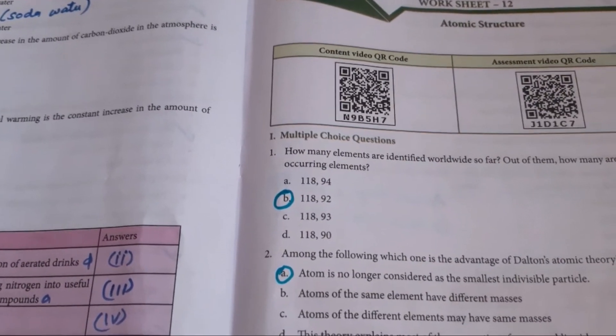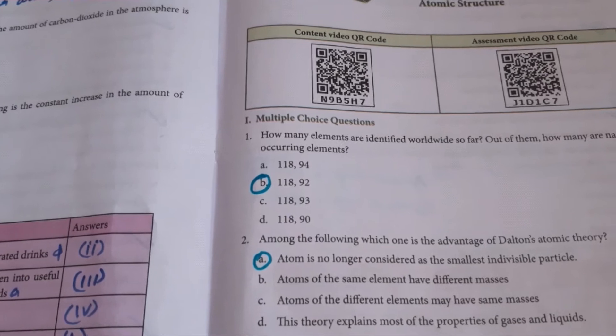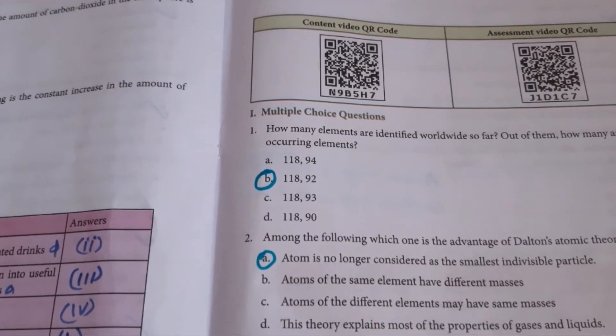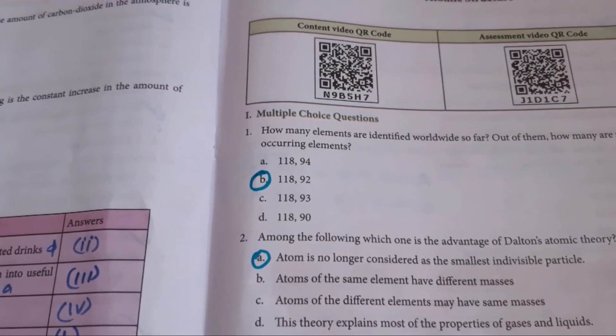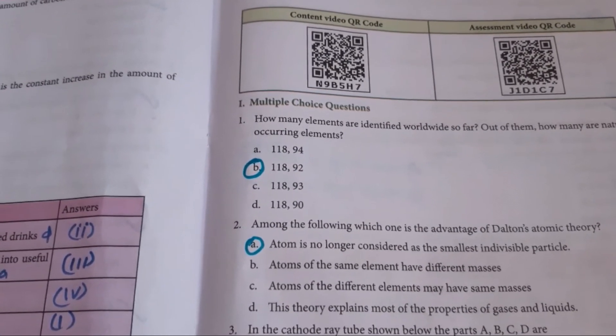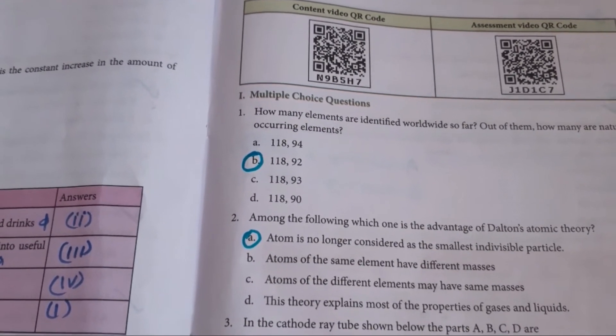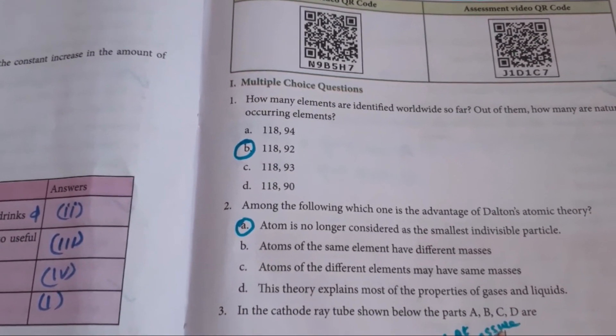First one, multiple choice questions. First question is, how many elements are identified worldwide so far? Out of them, how many are naturally occurring elements? So here, the elements identified as 118 and naturally occurring elements 92. So the answer is B, 118, 92.